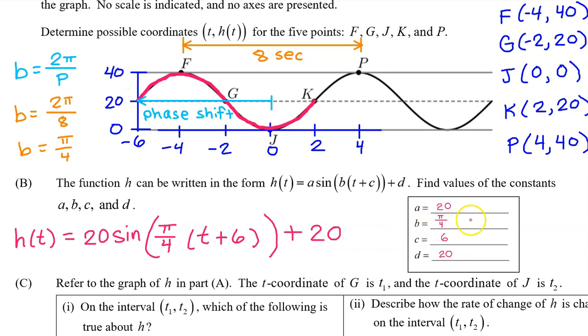On the AP exam, they will give you an answer box that you may use to record your values of a, b, c, and d if you like. Or, you can leave the answer box blank and record your answer as an expression for h of t with the values of a, b, c, and d filled in like this.